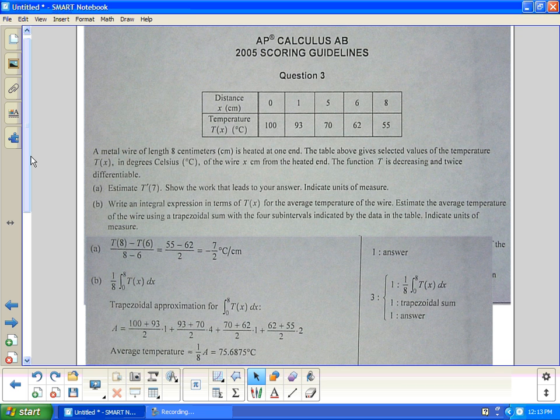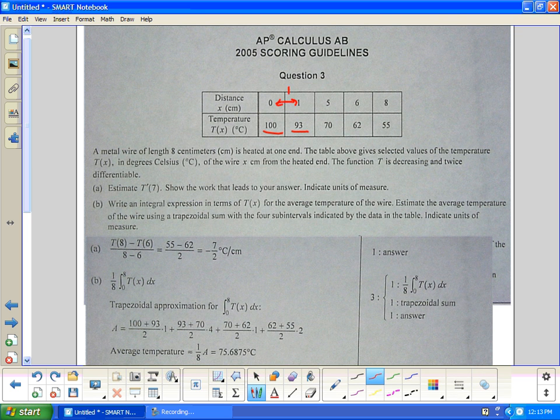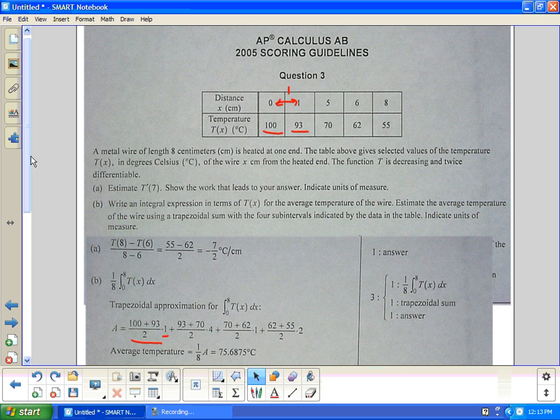Now a trapezoid sum. Remember our rules for a trapezoid. A trapezoid is (base one plus base two) divided by 2 times the height. Base one plus base two. The height of the first trapezoid is one. So here's the bases added. There's the height. I'll do it in green or blue. Base one plus base two, 70 and 93 here, divided by 2, and the height this time is four.